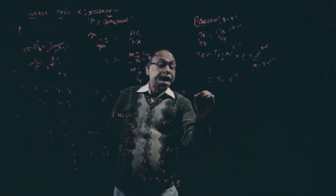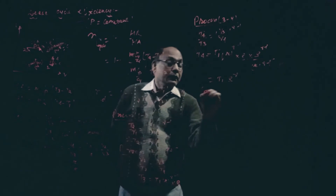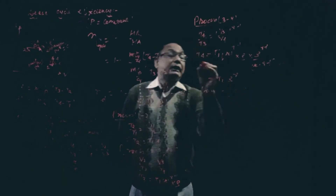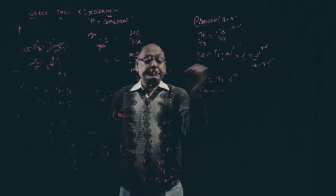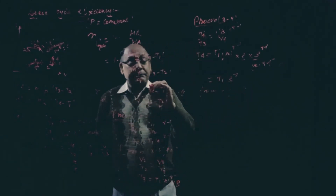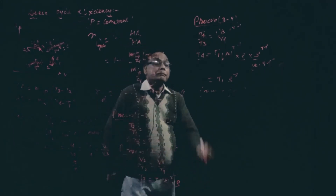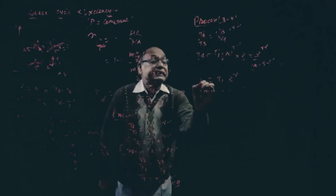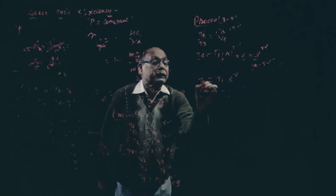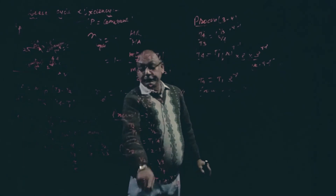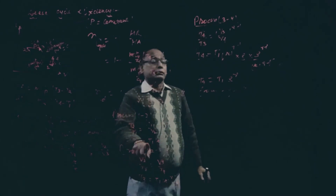Substituting T3 equals T1·R^(gamma-1)·Rho, the R^(gamma-1) terms cancel, so T4 equals T1·Rho^gamma. We have now converted T4, T3, and T2 all in terms of T1.